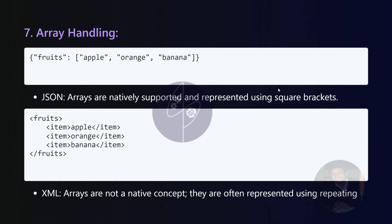Array handling. JSON provides native support for arrays, denoted by square brackets. In contrast, XML lacks native array concepts, often utilizing repeating elements to represent similar structures.